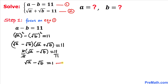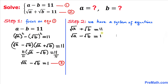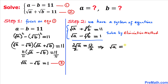Let's call this equation number three. Now let's focus on equations two and three. We'll solve this system by the elimination method. Adding equations two and three together, the minus square root of b and plus square root of b cancel out, leaving two times square root of a equals 12. Dividing both sides by two gives us square root of a equals six.